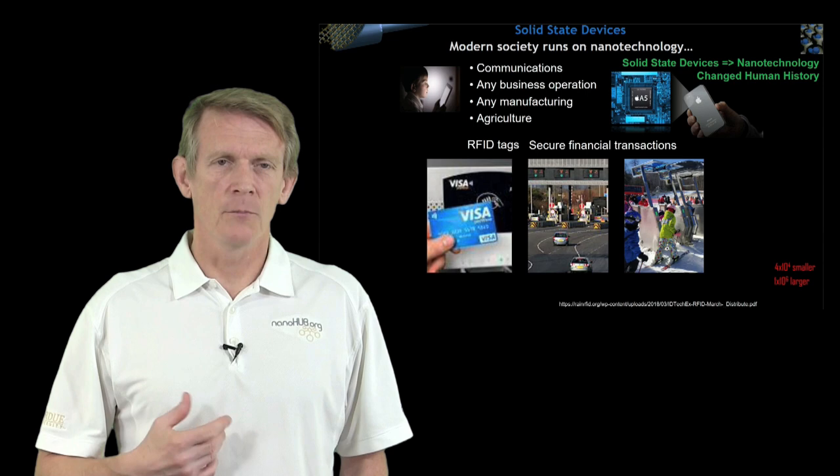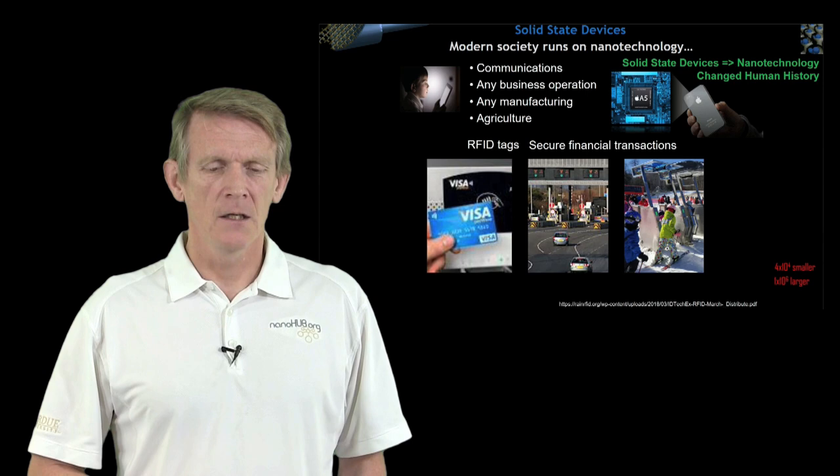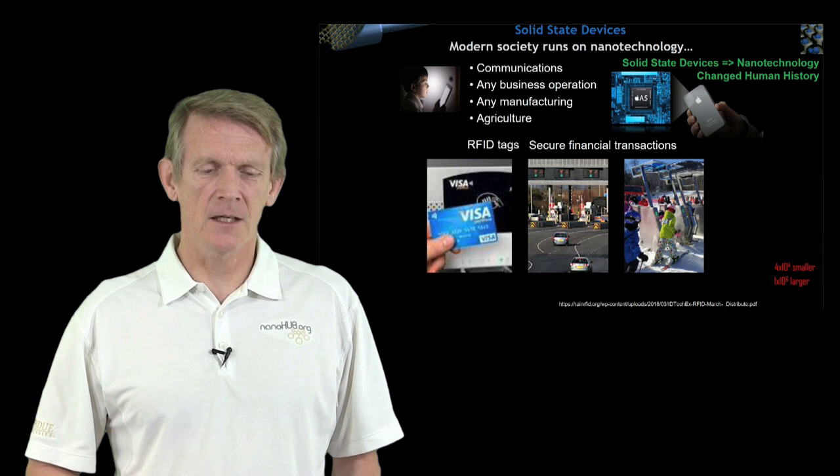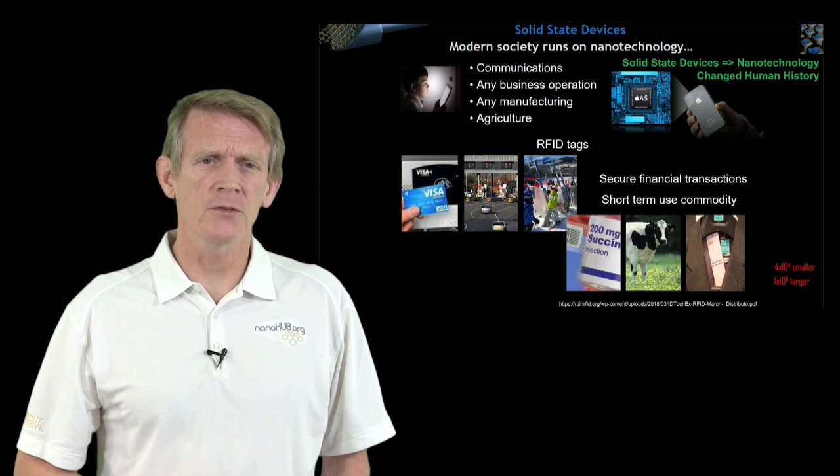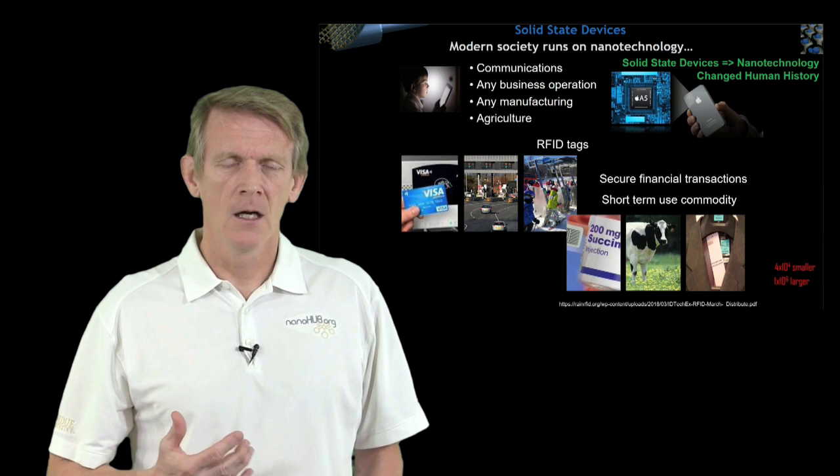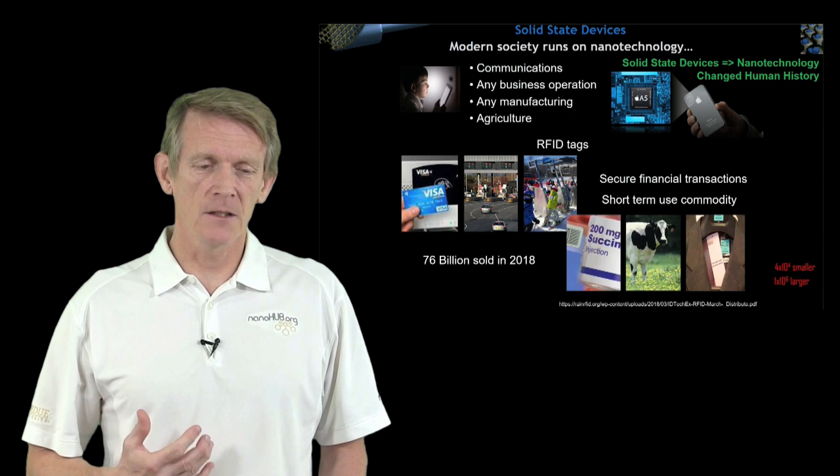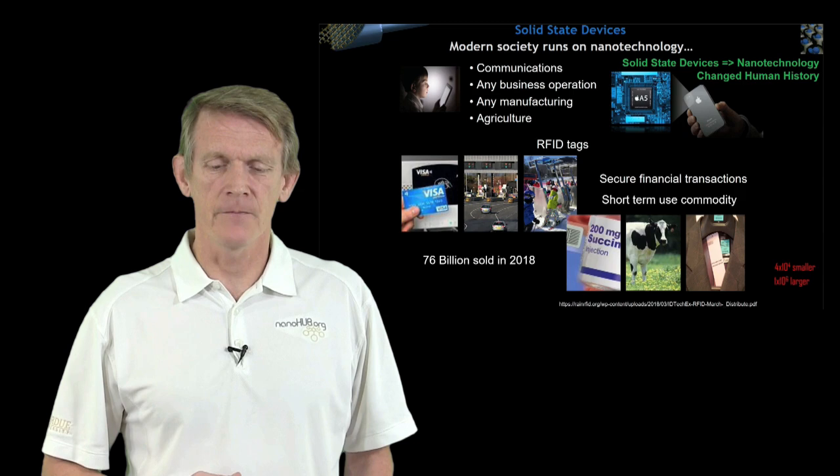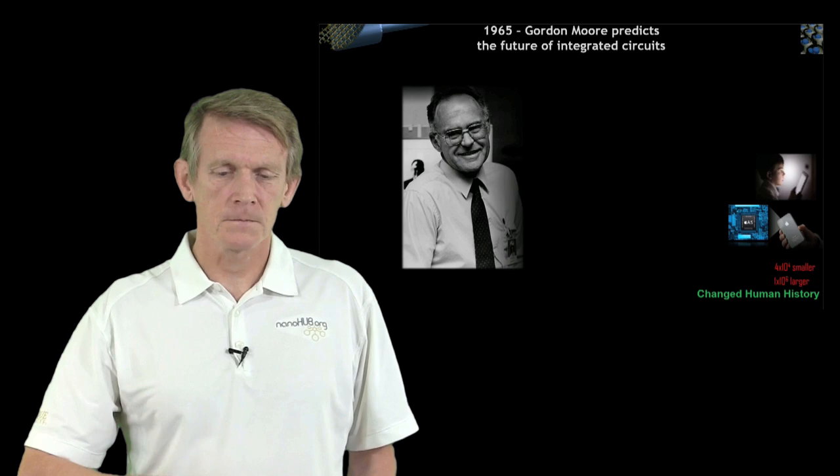You are familiar with small chips in your credit cards for security. You might have an RFID tag for toll booths if you live in a bigger city, or if you go skiing for identification and financial transactions. But it's more than just secure financial transactions. We use these now for short-term use commodities to tag medicine, animals, or merchandise. This device technology, even these simple RFID tags, 76 billion were sold in 2018. That's a dramatic infiltration into our world.